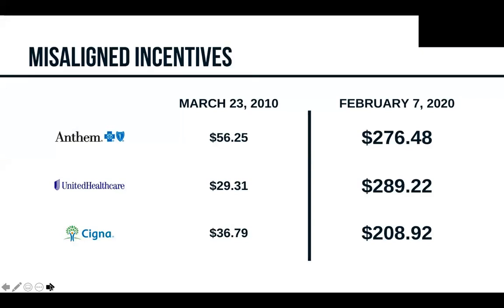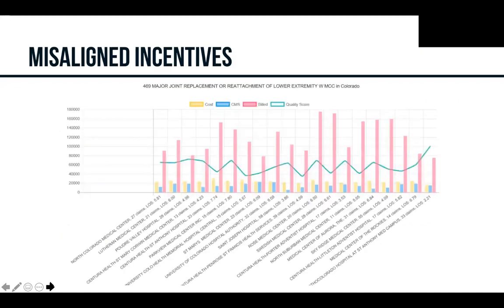You're looking at the three biggest health insurance carriers in the United States. On the left-hand side was the stock price of those three insurance companies the day the Affordable Care Act came out; on the right was the price at the end of last Friday. It's obvious insurance companies are making money right now — the Affordable Care Act has been pretty good for them, so they're not so interested in helping organizations save money.